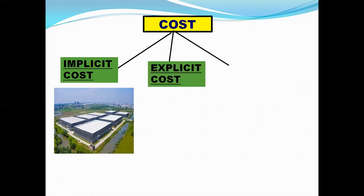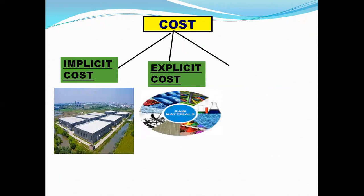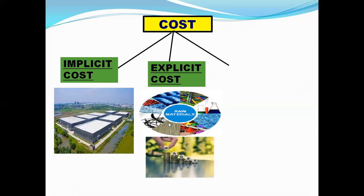Next is explicit cost. Money payments made to the owners of various factor services in the production of a commodity is known as explicit cost. For example, the firm makes payments to the owners of raw materials, gives wages to laborers, and incurs expenditure on machines. So these are examples of explicit cost.